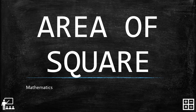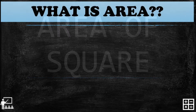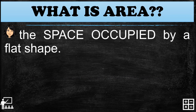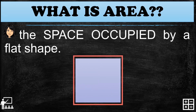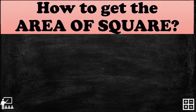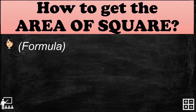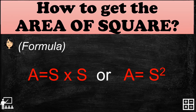This video lesson is about area of a square. Area is the space occupied by a flat surface. To get the area of a square, we use the formula: A equals S times S, or A equals S squared. S squared means you are going to multiply the side by itself.